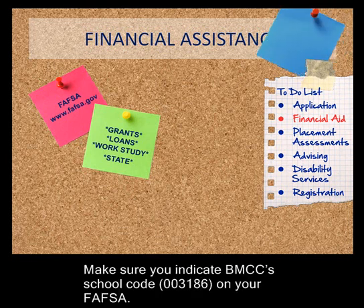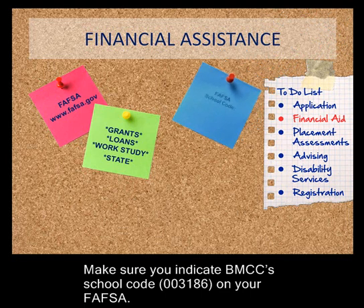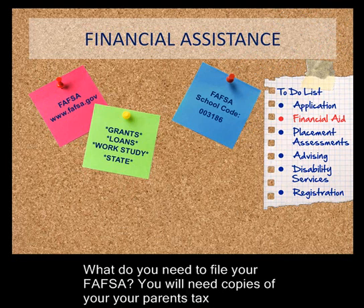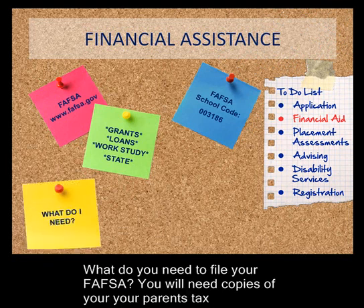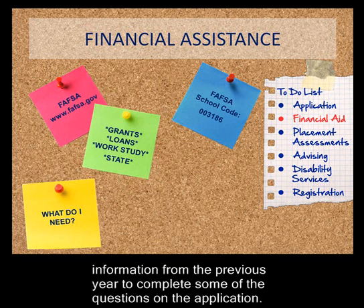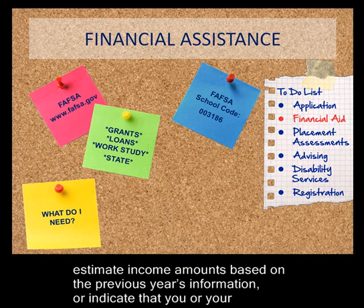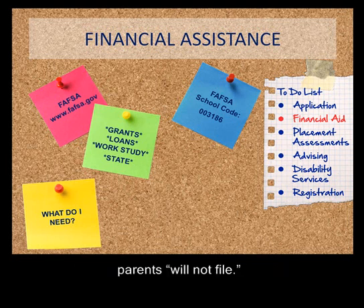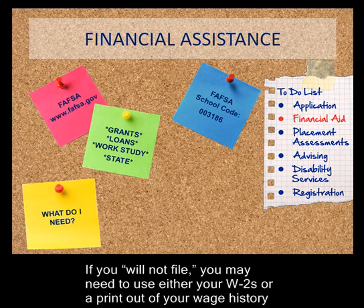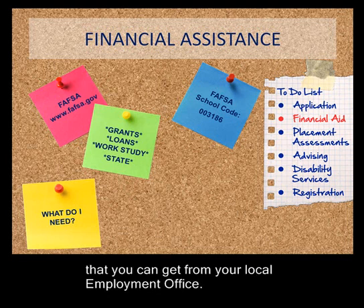The school code enables the application information to be electronically transferred to the schools you are considering attending. Make sure you indicate BMCC's school code 003186 on your FAFSA. You will need copies of your and your parents' tax information from the previous year to complete some of the questions on the application. If you have not filed taxes, you have the option of checking the box to say you will file and estimate income amounts based on the previous year's information, or indicate that you or your parents will not file. If you will not file, you may need to use either your W-2s or a printout of your wage history from your local employment office.